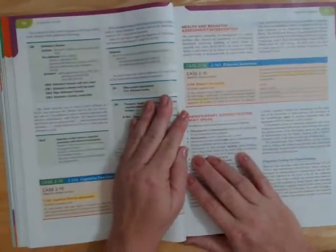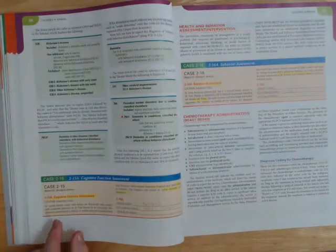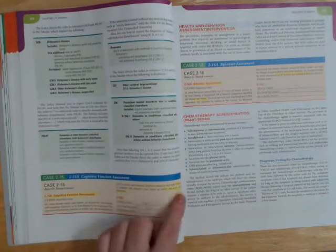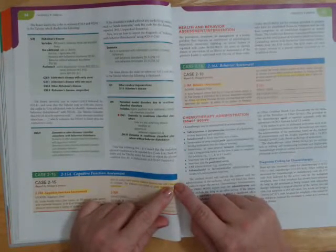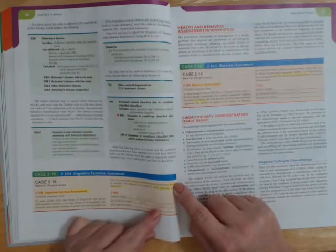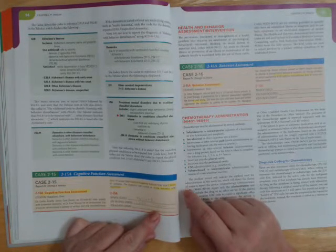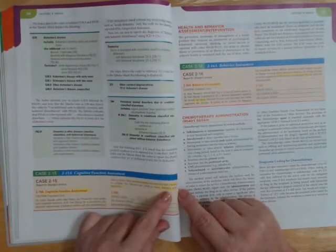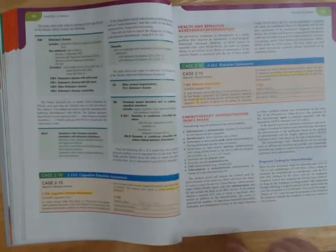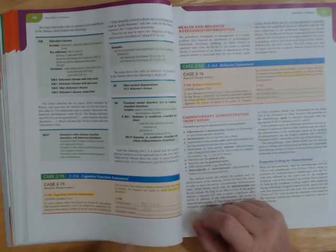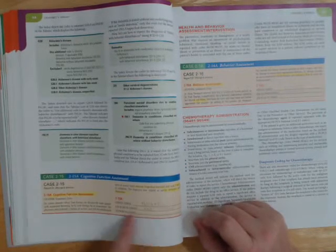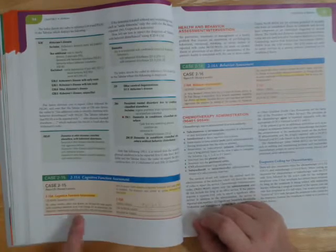Cognitive function assessment, Case 2-15: This has taken two hours, so make sure your code accounts for that two hours. This patient has senile dementia with depression. Make sure you find that combination code in your ICD-10. I think you will find that this one actually isn't that difficult.